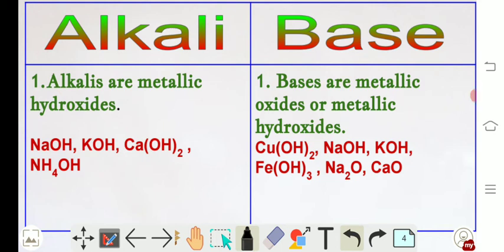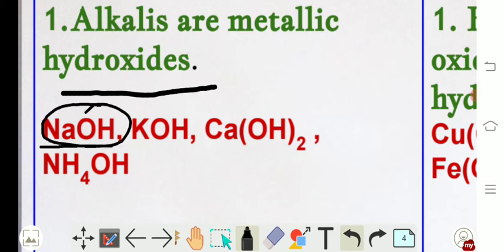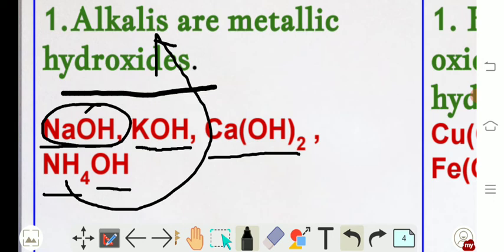The first difference: alkalis are metallic hydroxides. Metallic hydroxide means, for example, sodium hydroxide — sodium is a metal and OH is hydroxide, so together it forms a metallic hydroxide. Similarly, potassium hydroxide — K is potassium, a metal, so it is also a metallic hydroxide. However, ammonium hydroxide is not strictly a metallic hydroxide since ammonium is not a metal, but it is still categorized as an alkali because it gives hydroxide ions when dissolved in water.